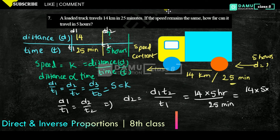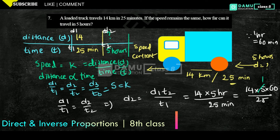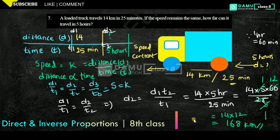Since 1 hour equals 60 minutes, convert 5 hours to 300 minutes. So d2 equals 14 into 300 divided by 25. After cancellation: 14 times 12 equals 168 kilometers. So 168 kilometers is the distance traveled by the loaded truck.